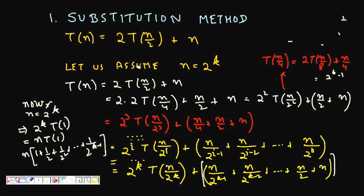For simplicity in solving, let's assume that N is a power of 2 — that is, N = 2^K where K is some positive integer. So now we can write T(N) = 2T(N/2) + N.